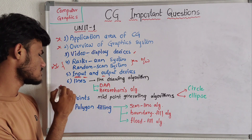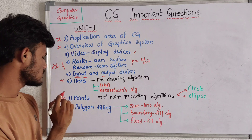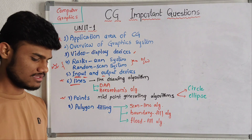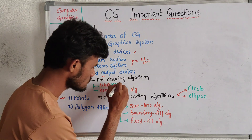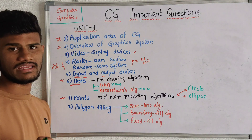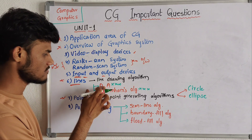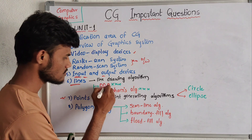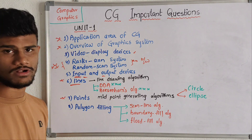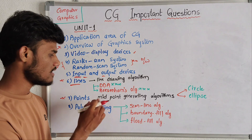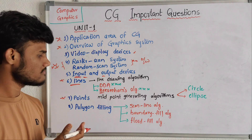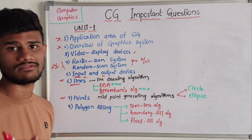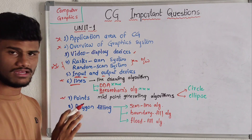Then next we have lines and points — these two are very very important questions. For lines, the most important topics are the DDA algorithm (Digital Differential Analyzer) and Bresenham's algorithm. Both are individually very very important. You must prepare these two questions — they are guaranteed questions.